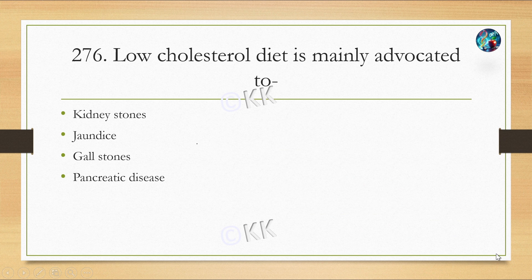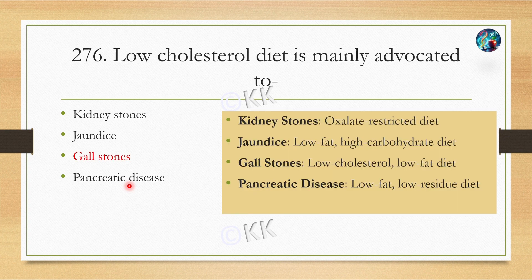Low cholesterol diet is mainly advocated for: option A, Kidney stones; option B, Jaundice; option C, Gallstones; option D, Pancreatic diseases. The correct answer is Gallstones — patients with gallstones are generally advised a low cholesterol, low fat diet. For kidney stones, an oxalate-restricted diet is given. For jaundice, a low fat, high carbohydrate diet is given. For pancreatic diseases, a low fat, low residue diet is suggested.